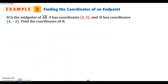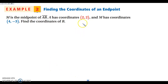Moving on to example 2. We're told that M is the midpoint of segment AB. We're given the coordinates for A, and we are given the coordinates for the midpoint. We are finding the coordinates of the other endpoint. This is different from the last example — last example we were given both endpoints and wanted to find the midpoint. This one, we're given the midpoint and want to find one of the endpoints. We start by writing the midpoint formula: X1 plus X2 over 2, and yes, you do need to memorize this formula. And Y1 plus Y2 over 2.